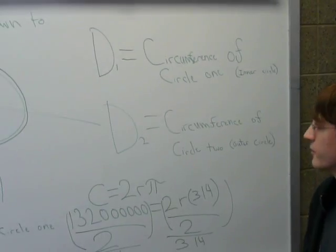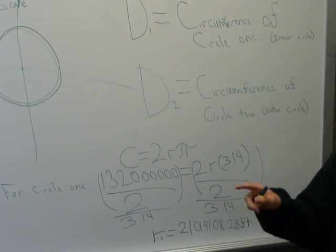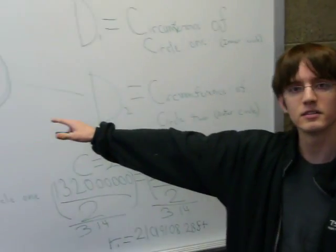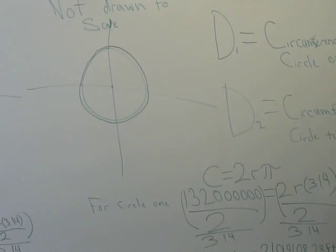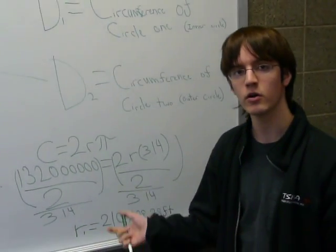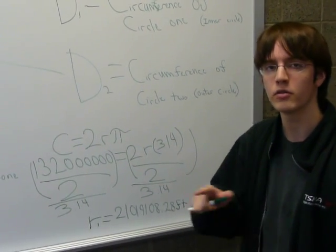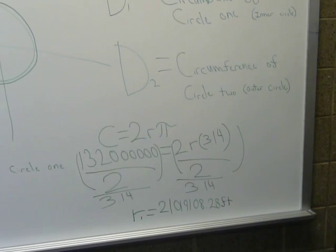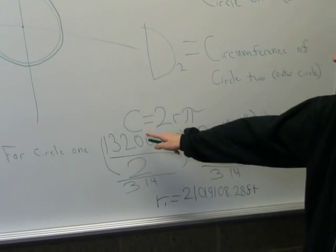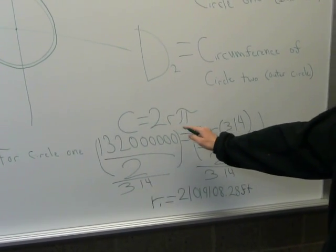To find the distance suspended above, I found the radius of each circle and then subtracted the radius of the Earth from the radius of the circle suspended around Earth. To find the radius, I used circumference equals 2R pi.